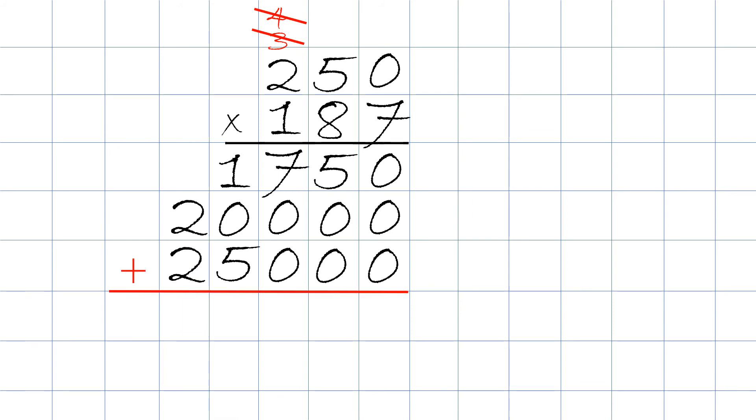We always start with the right column. Zero plus zero plus zero equals zero. Five plus zero plus zero equals five.